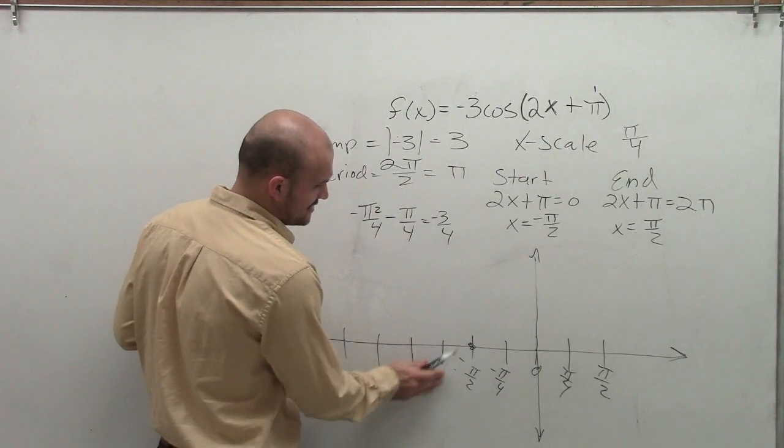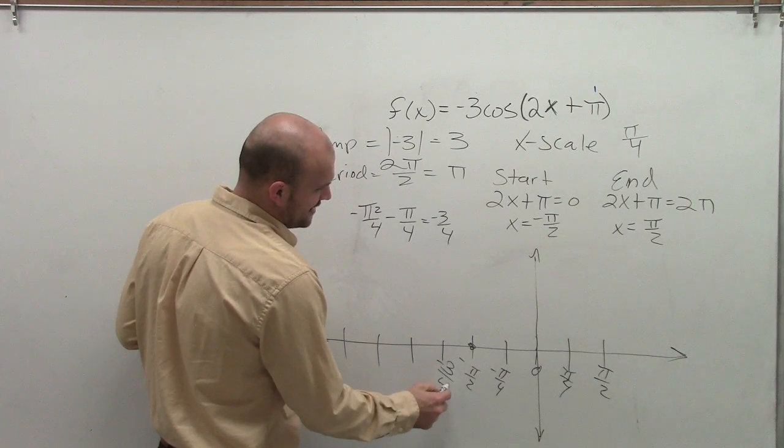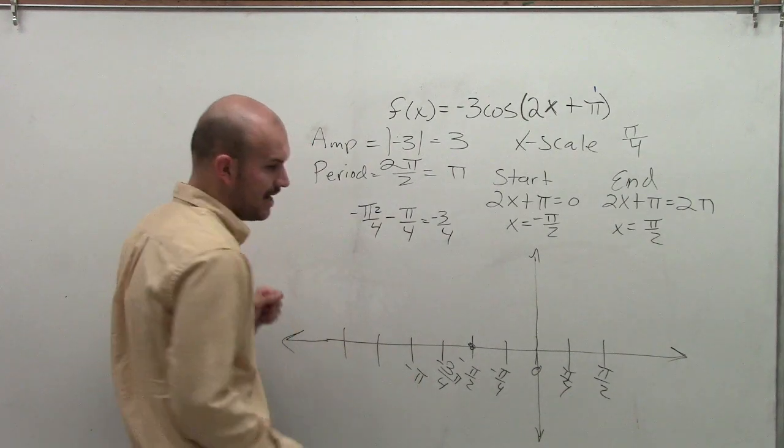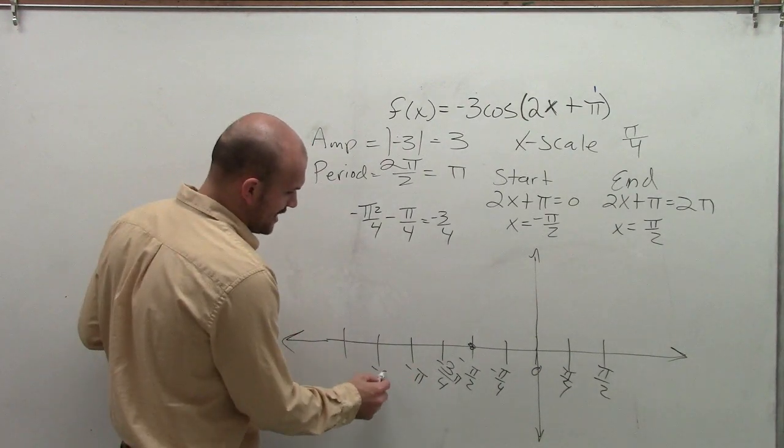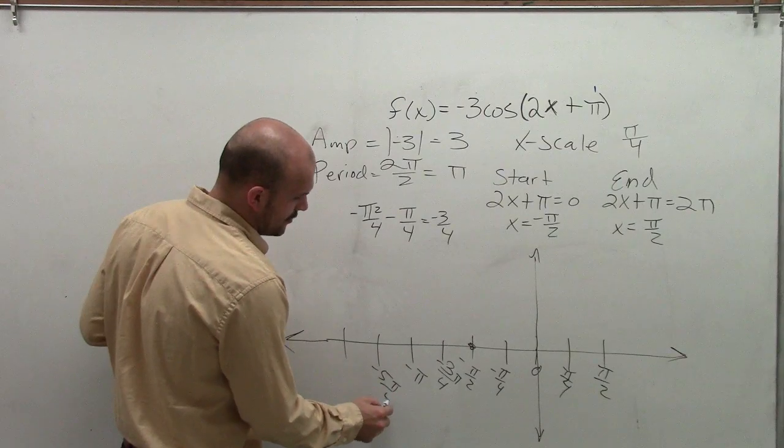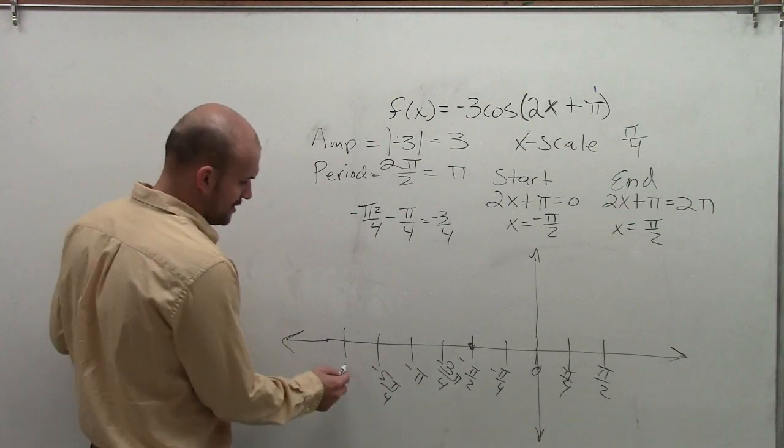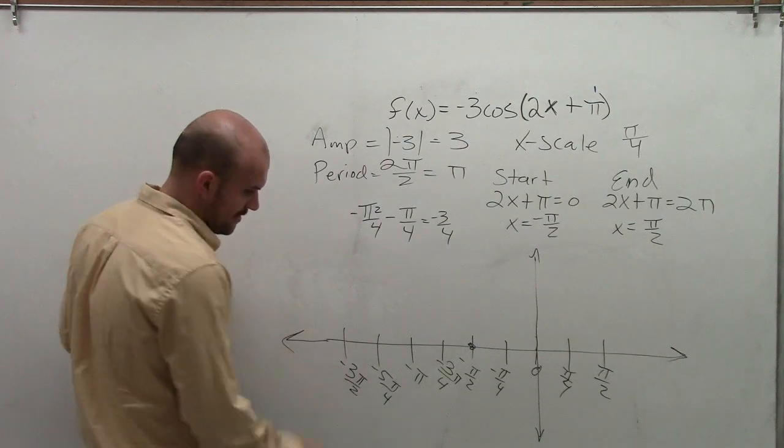So this is -π/2. So this is -3π/4. Therefore, this is going to be -π. This will be -5π/4. And then this will be -6π/4, which will be -3π/2.